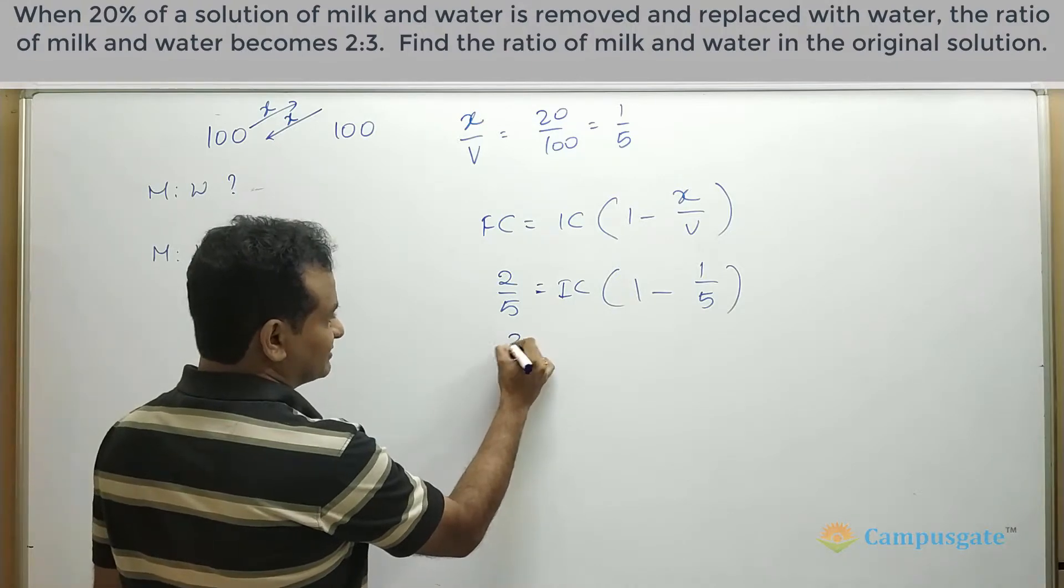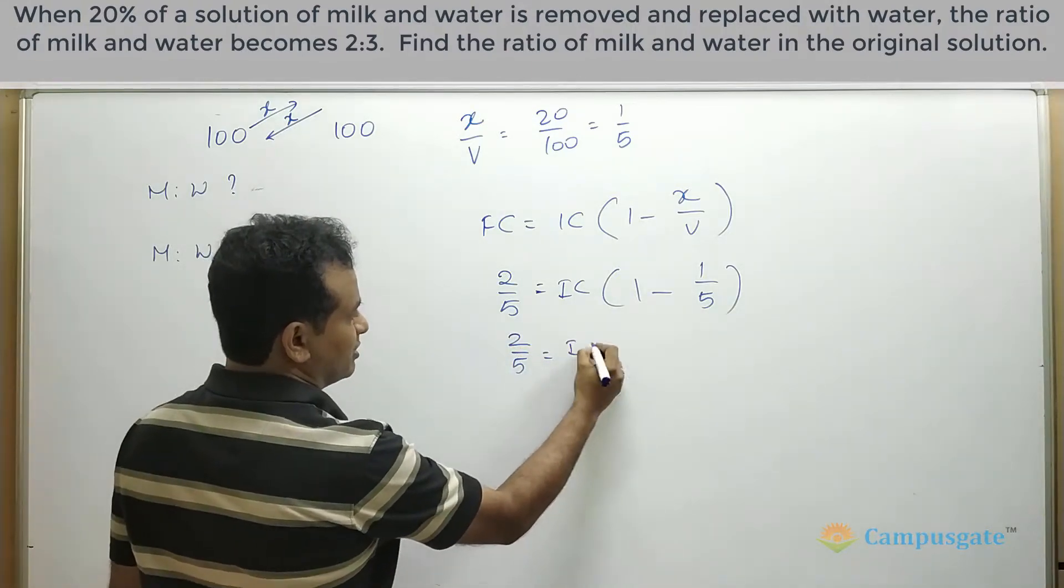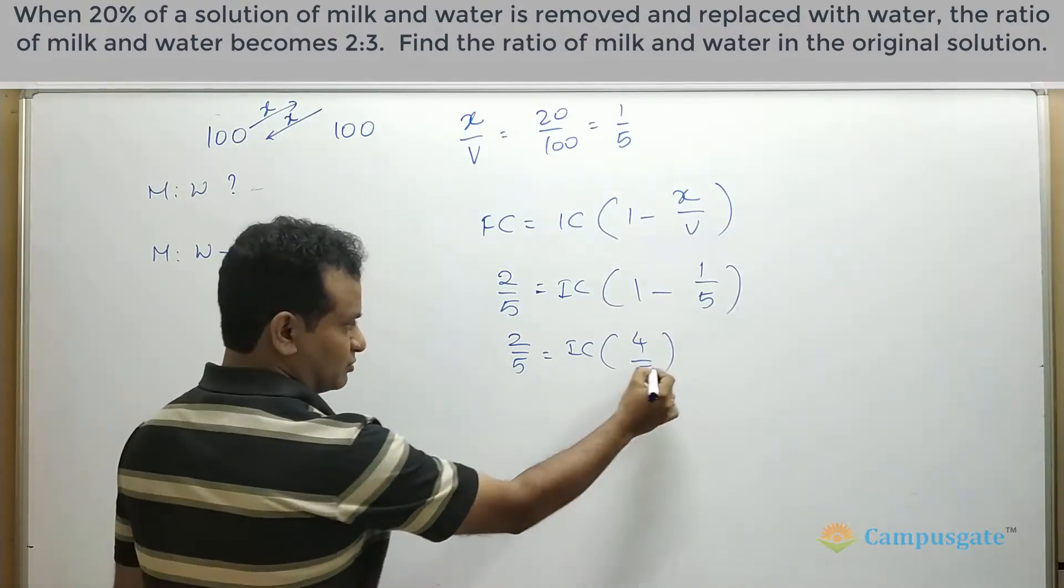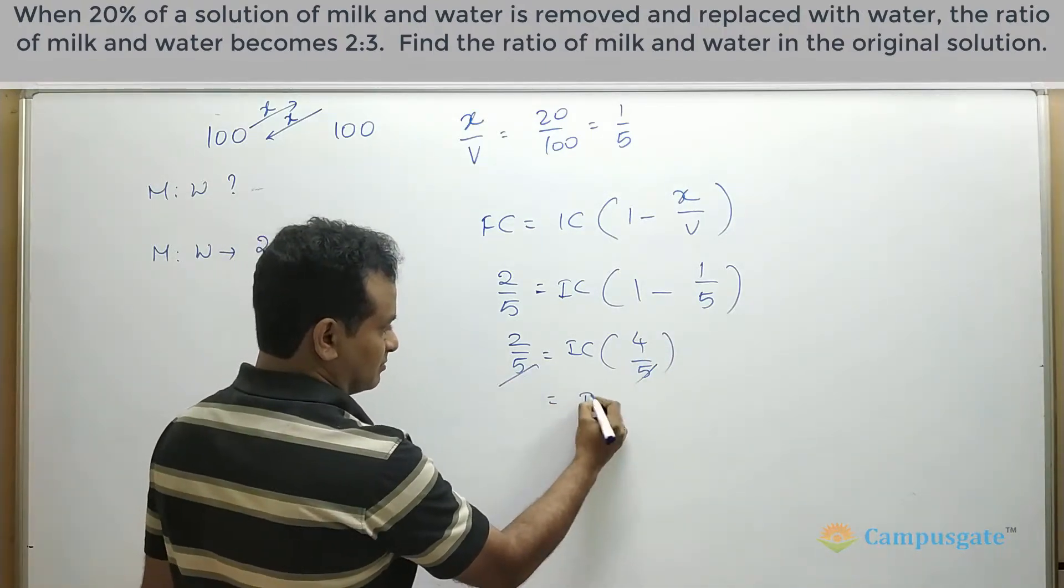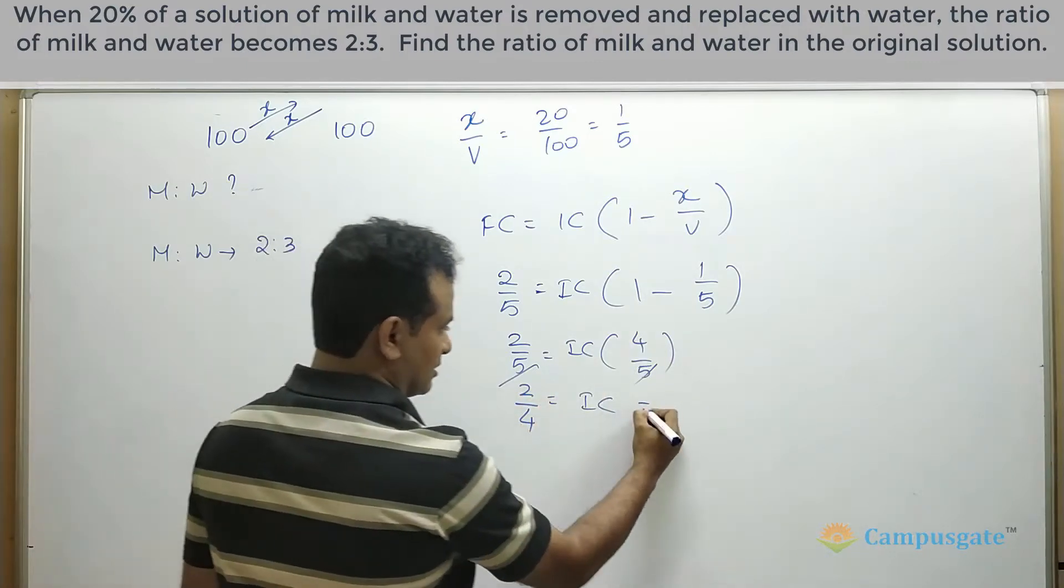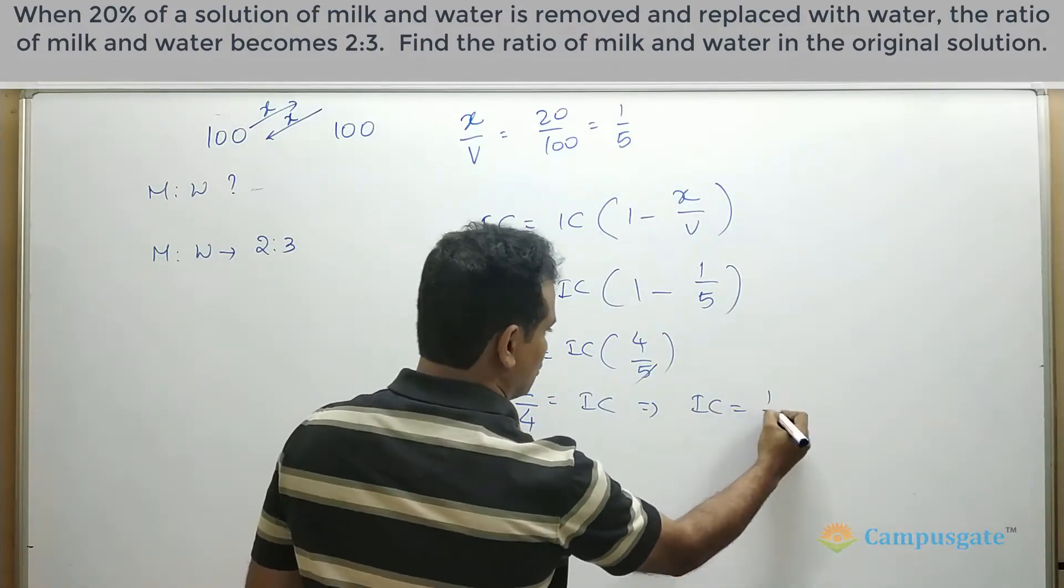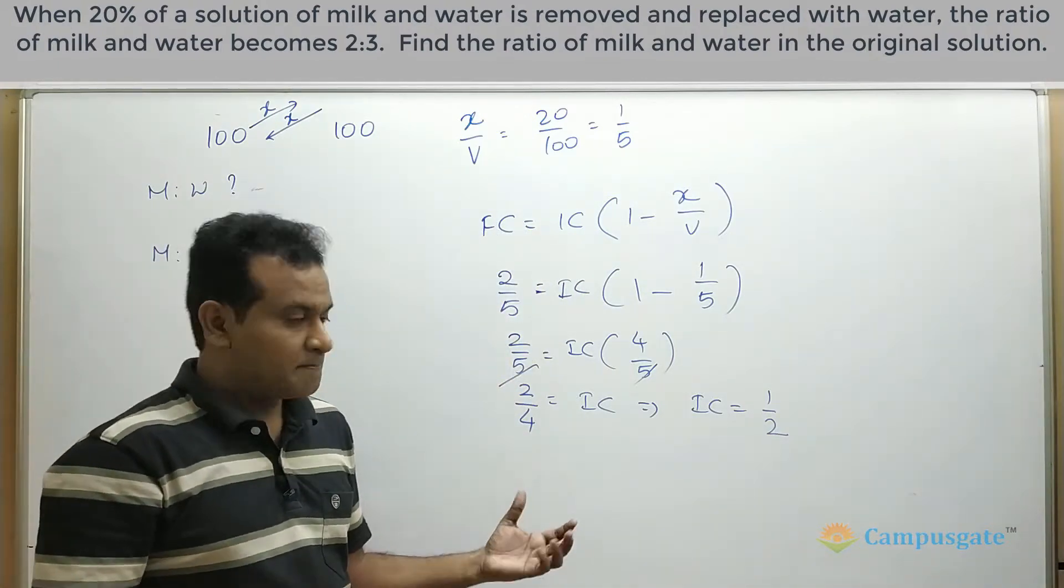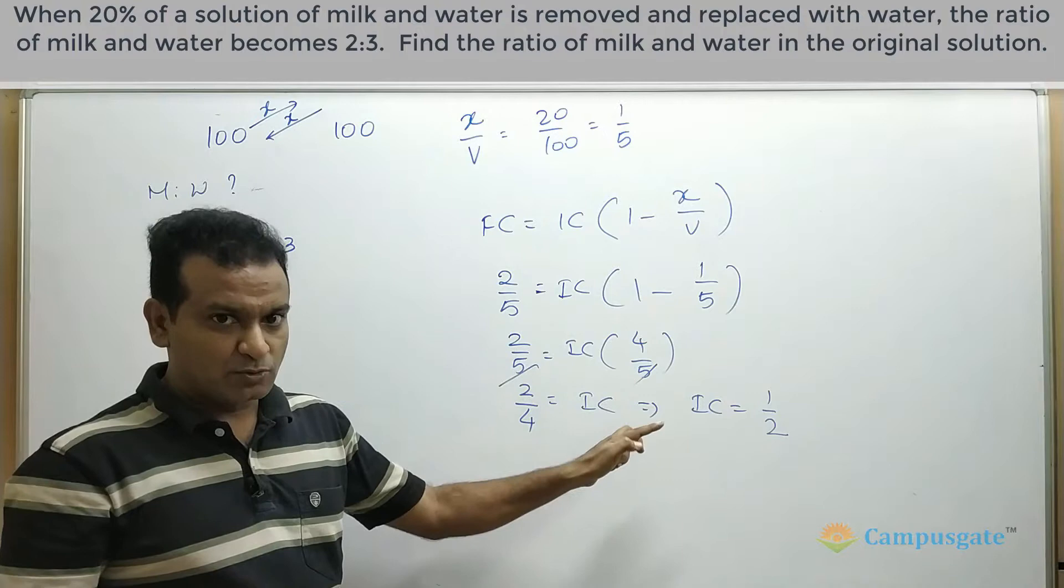So let us simplify this. So 2 by 5 equal to initial concentration into 4 by 5. So 5 and 5 gets cancelled out. IC equal to 2 by 4 comes to the denominator. Therefore, IC equal to 1 by 2. That means the milk concentration initially is 1 by 2. This is proportion.